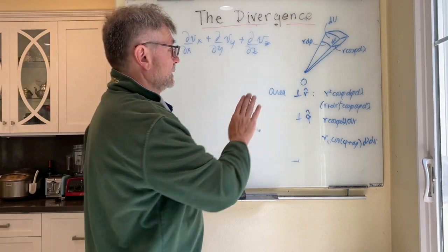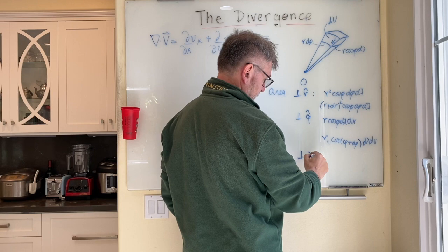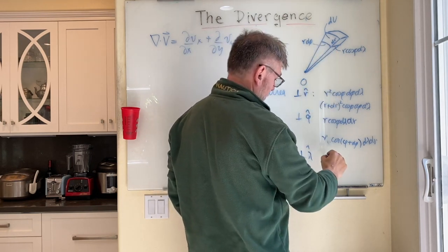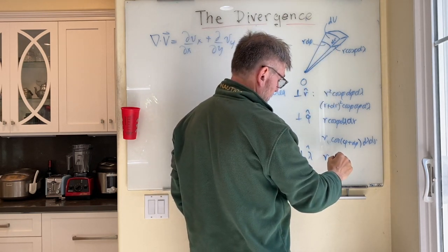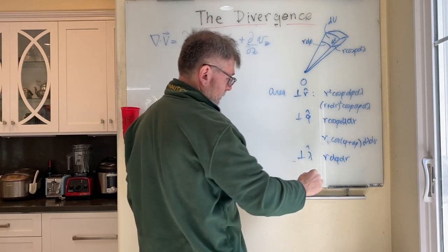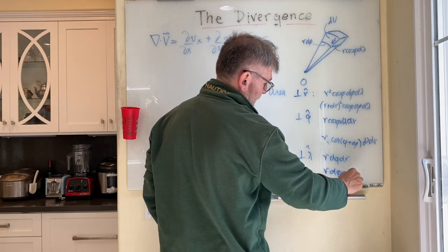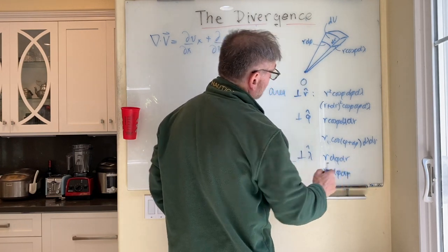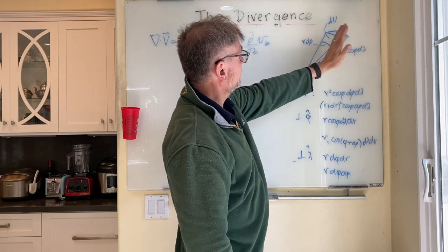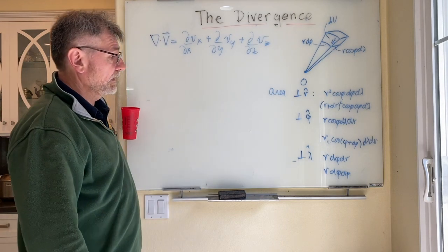Finally, perpendicular to the lambda-hat direction: the front face area will be r d phi dr. And on the back side it will also be r d phi dr — they're the same. It doesn't depend on phi or on r. So both faces perpendicular to the lambda-hat direction have the same area.